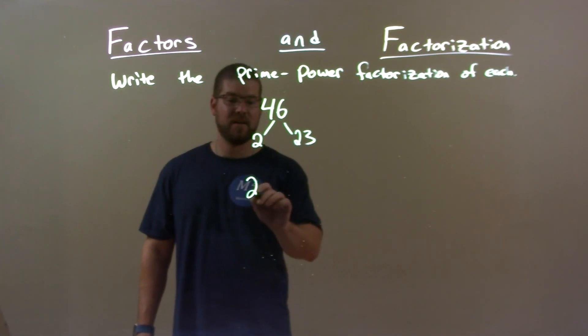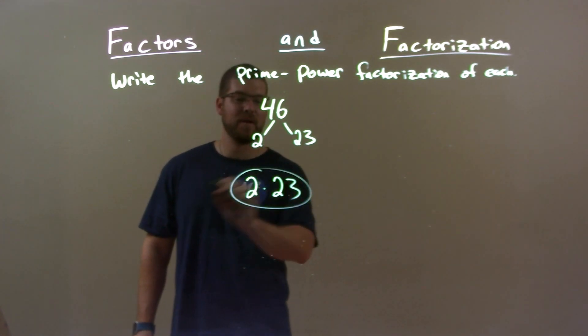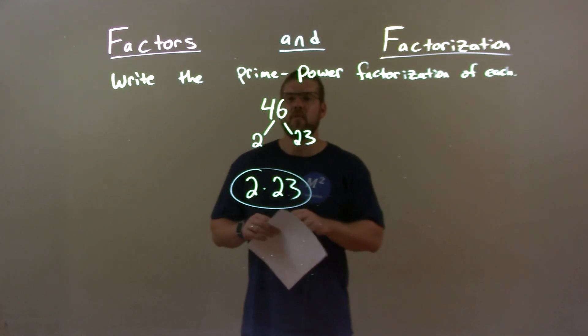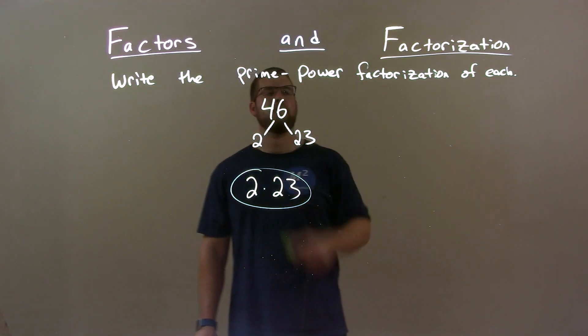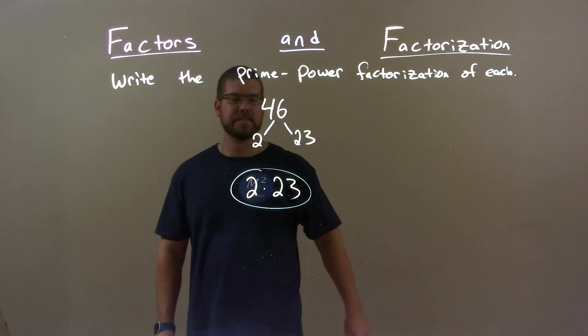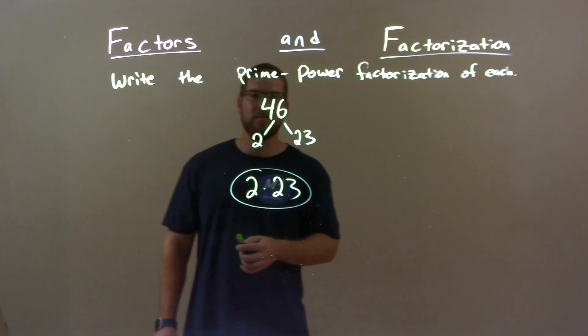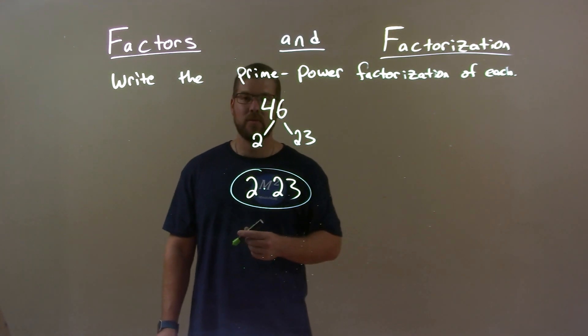That's it. Final answer is just 2 times 23. Cannot break it down anymore. Quick recap. We're given 46, and we have to write the prime power factorization of it. 46 breaks down to be 2 times 23, and both of these are prime numbers. Final answer, 2 times 23.